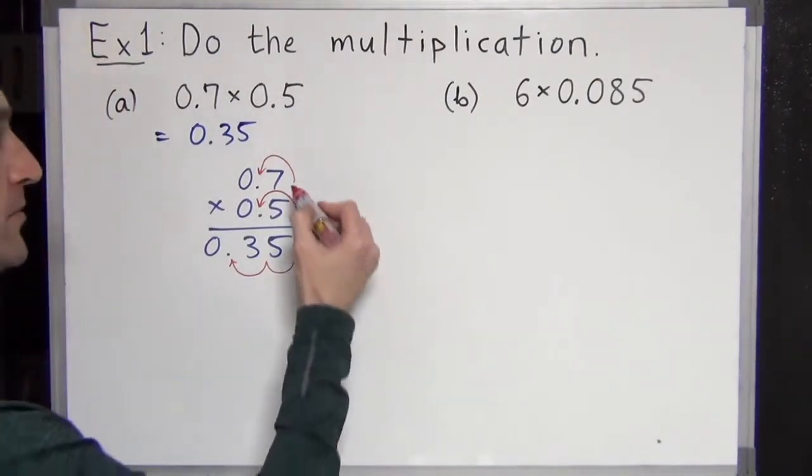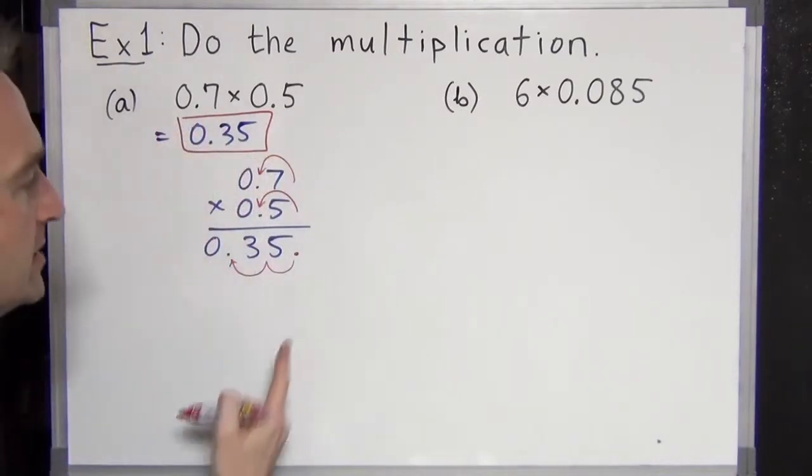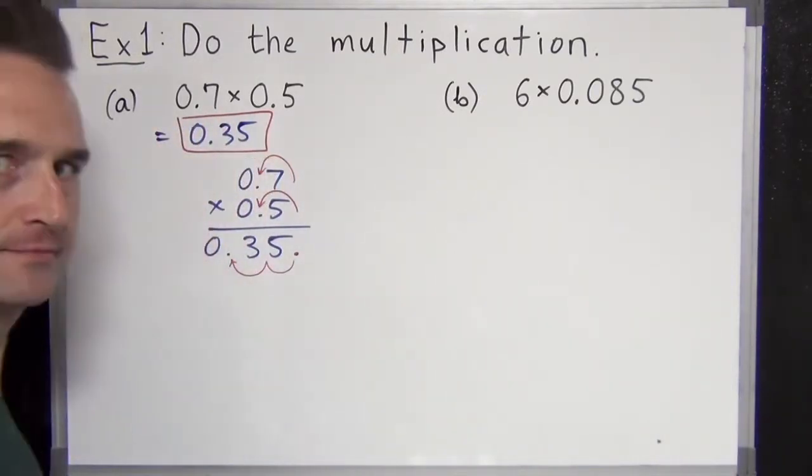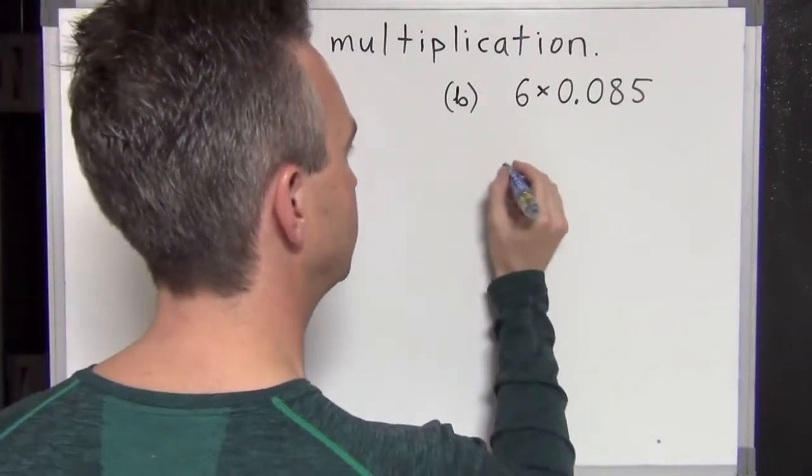0.35 is our answer. So we count the total number of decimal places in the question, add that together, and that is the total number of decimal places in the final answer. Got it? Let's try another one. Six times 0.085. Let's try that.